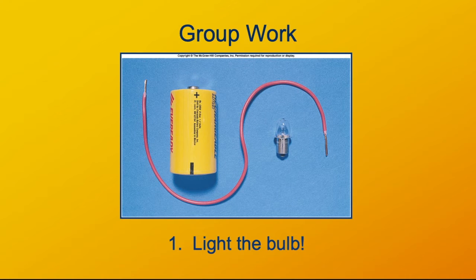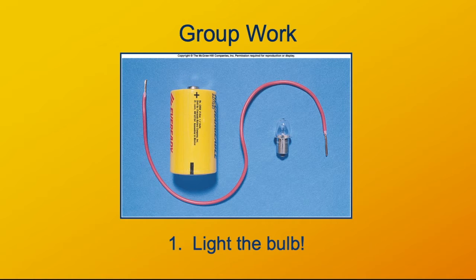We begin with a pictorial depiction of an activity we managed to do in class before we went home, which was to light a flashlight bulb using just a battery and a single wire. Before they do this activity, a lot of students don't believe that this is even possible. They think they need two wires or something like that.